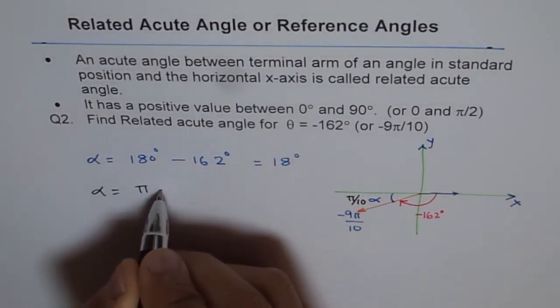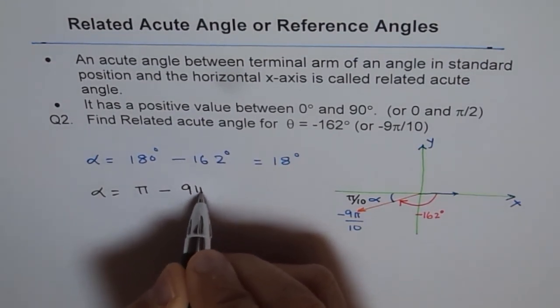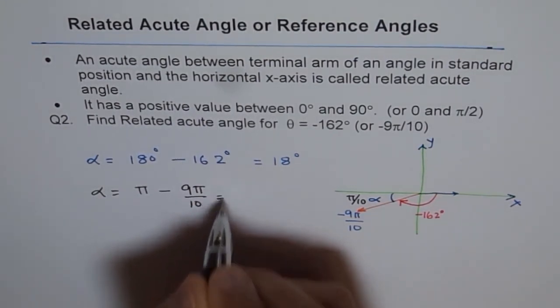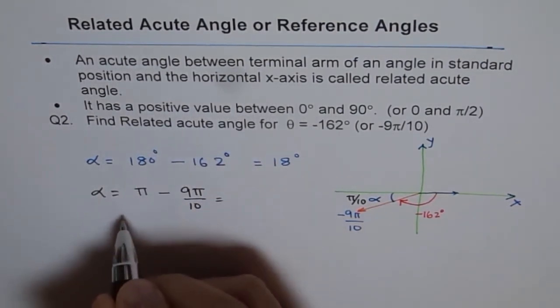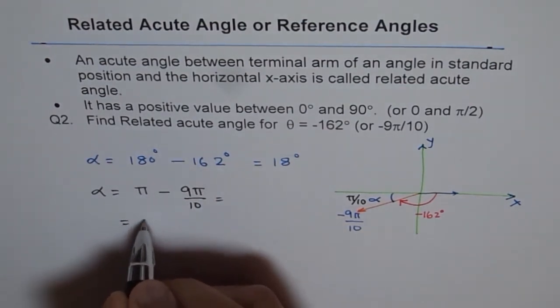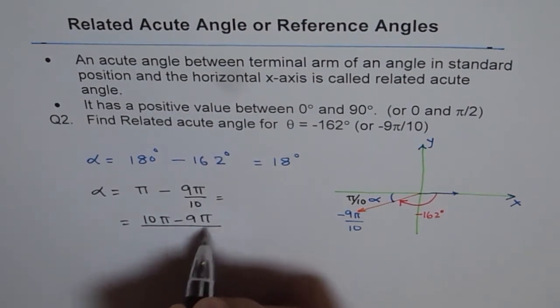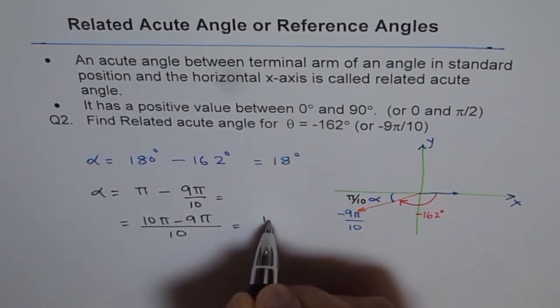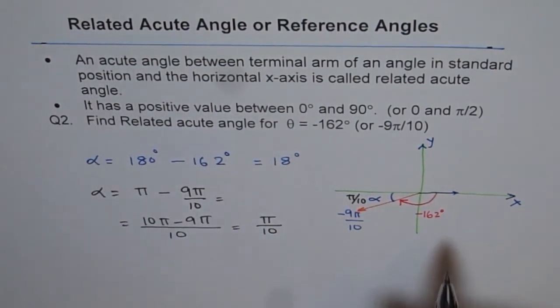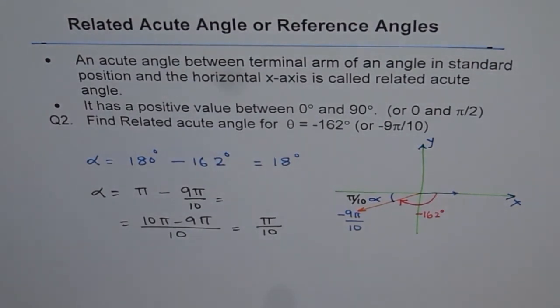That is π minus 9π/10, which gives you 10π minus 9π by 10, which is π/10. So we are trying to solve these questions in both radians and degrees so that all students can learn from it. Thank you.